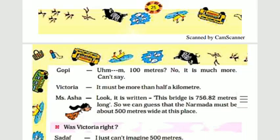Ms. Sasha says look — it is written that this bridge is 756.82 meters long. So we can guess that the Narmada must be about 500 meters wide at this place, because the river is somewhat narrower than the bridge.